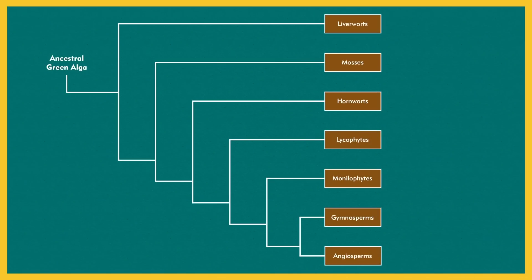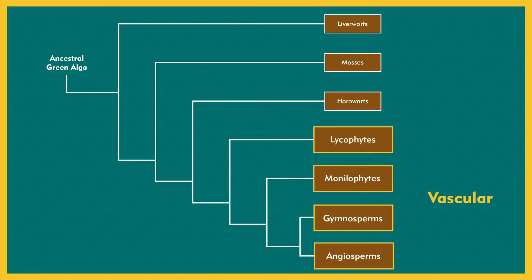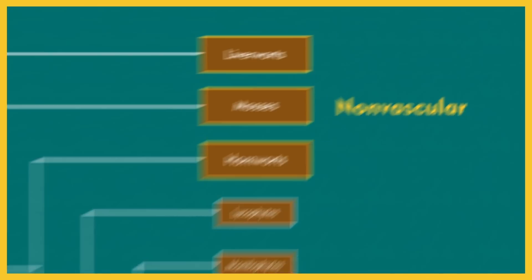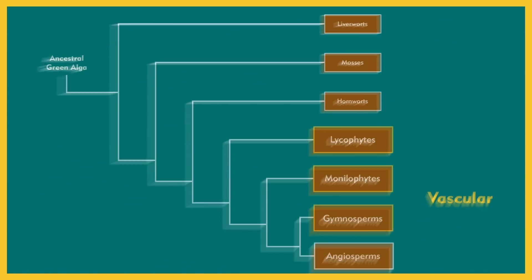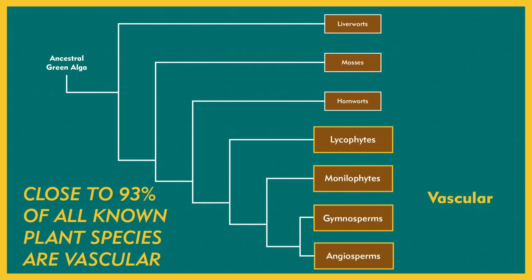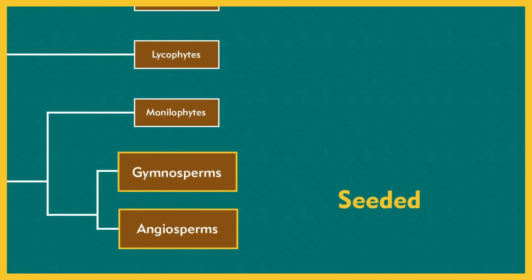The first split on the plant phylogenetic tree is between vascular and nonvascular plants. Nonvascular plants lack extensive developed tissue systems that help move water and nutrients around the plants. These are commonly called bryophytes, or liverworts, mosses, and hornworts. Vascular plants make up all of the rest – in fact, close to 93% of all known plant species are vascular. These species can either be seedless or seeded, and that's the next big split in the tree.